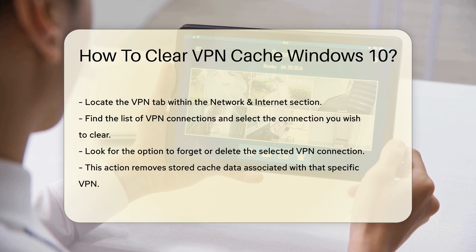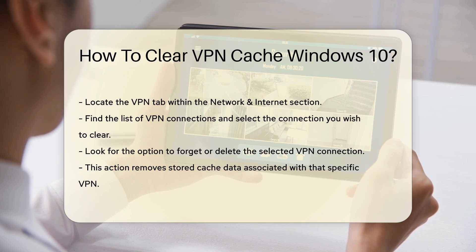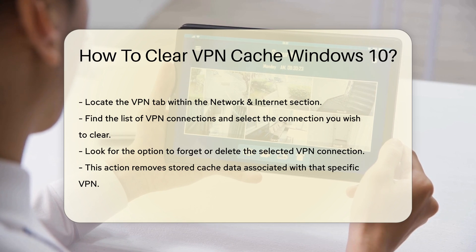Select the VPN connection you wish to clear. After selecting it, look for the option to forget or delete the connection. This action will remove stored cache data associated with that VPN.